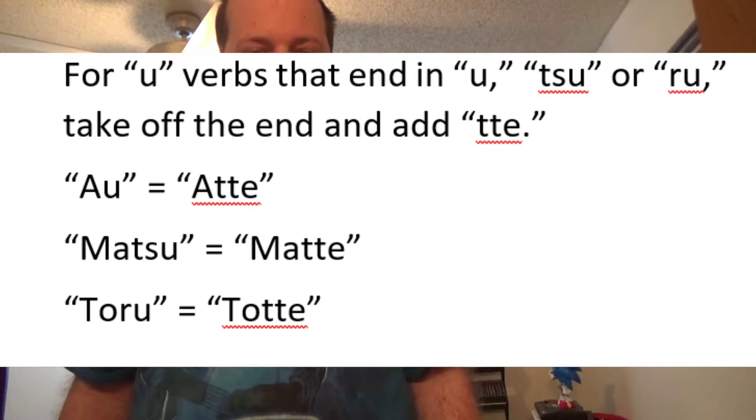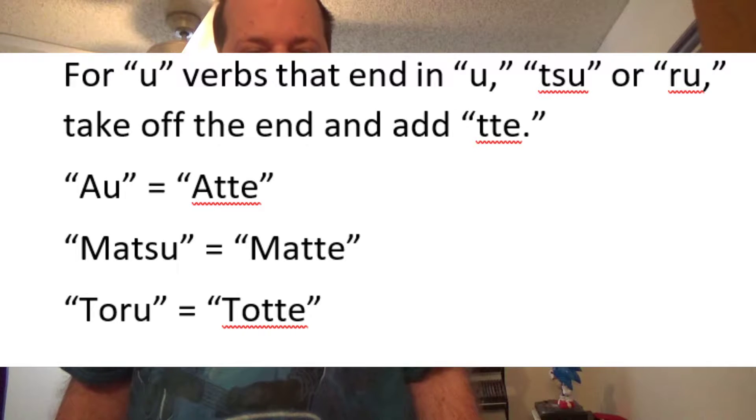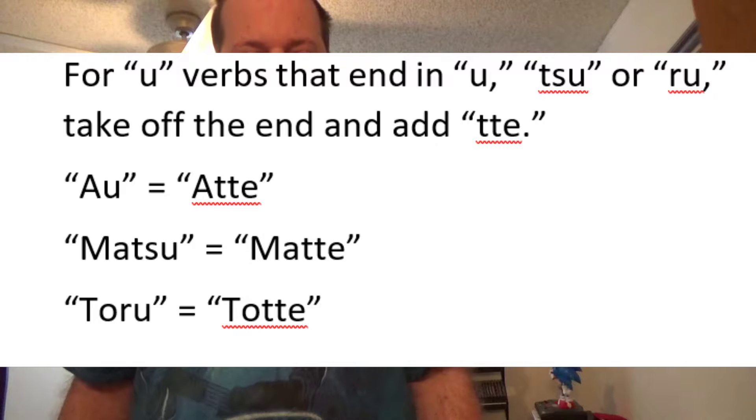The rules for u-verbs are more complex and change based on how they end. For verbs which have the final syllables u, tsu, and ru, you take it off and add te. Au becomes atte, matsu becomes matte, and toru becomes totte.